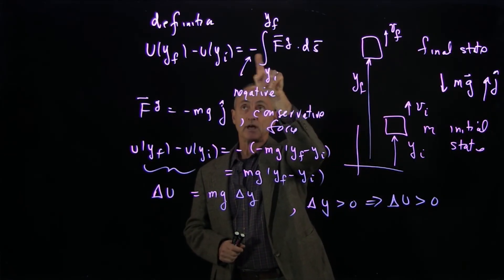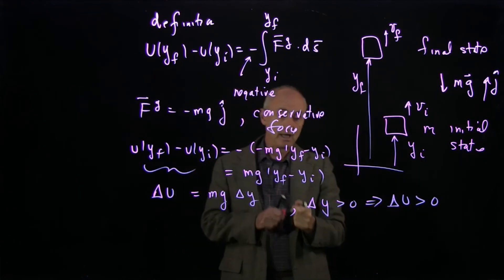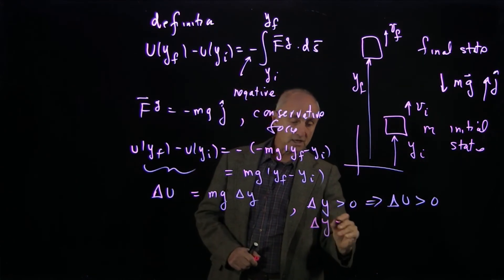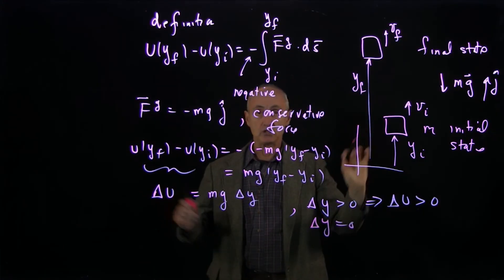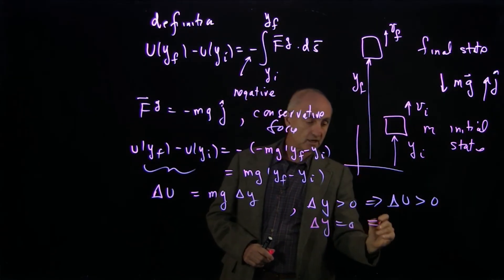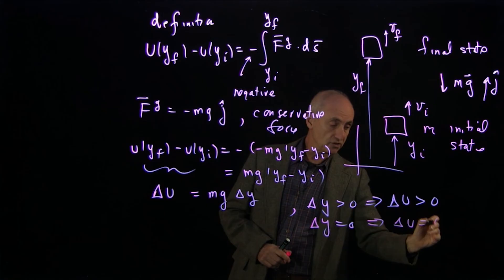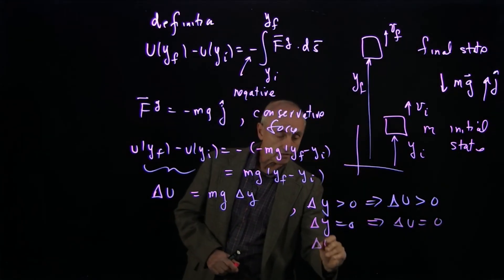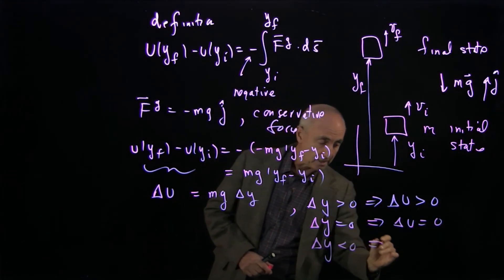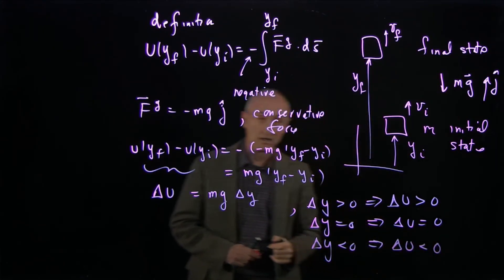If the object is moving with no change in height, that tells us that the potential energy change is zero. And finally, if delta y is less than zero, that implies that the change in potential energy is negative.